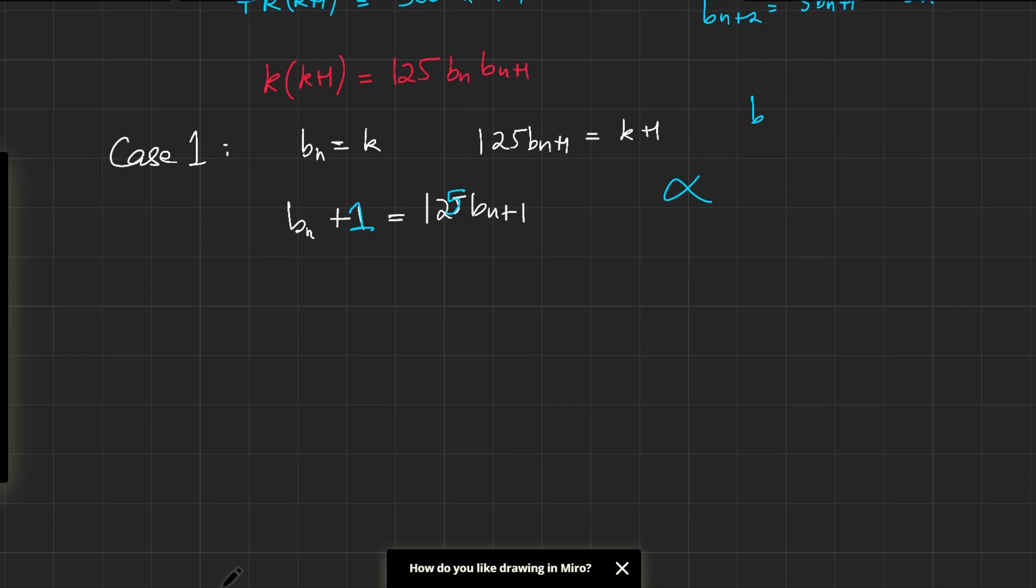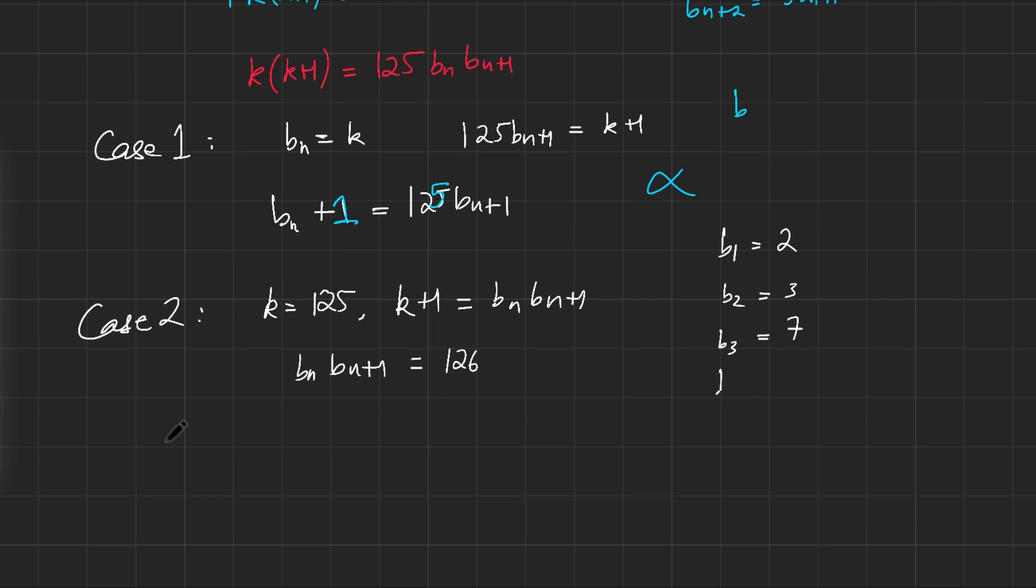What could the other case be? Case 2: let's say k is 125, and that would mean then k+1 is equal to bₙbₙ₊₁. So that means bₙ and bₙ₊₁ multiply together to give 126. We know b₁ is 2, we know b₂ is 3, we know b₃ is 7. And then b₄ would be 21 minus 3, which is 18. b₅ would be 54 minus 7, that would be 47.